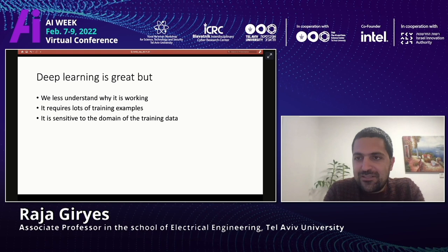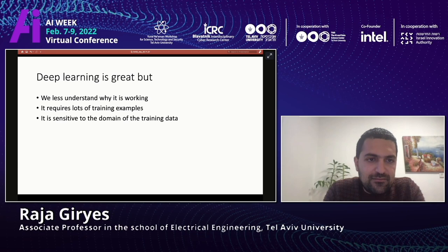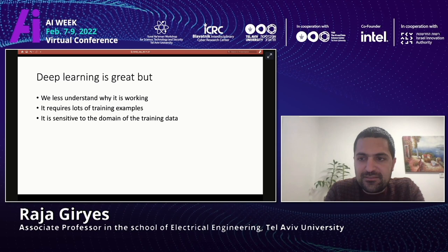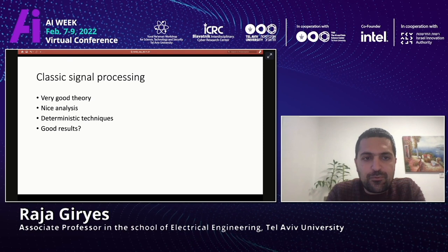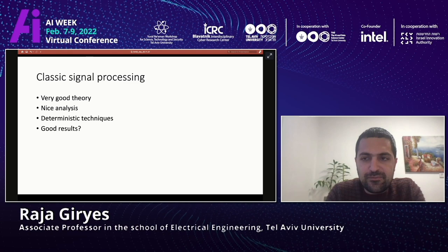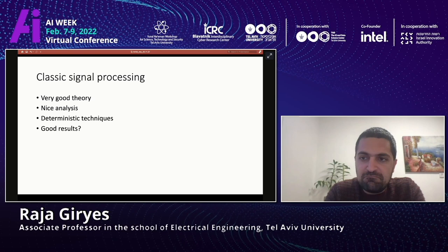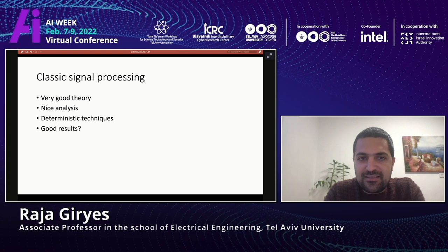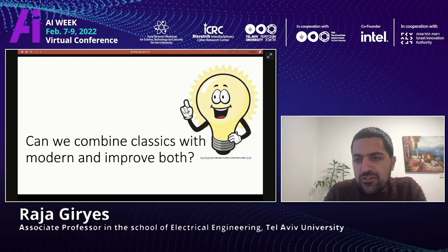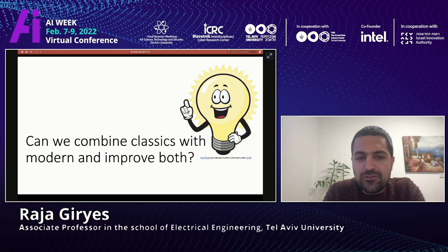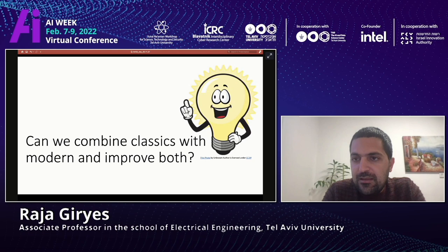We all know that deep learning is great. We have the AI Week where almost everyone uses deep learning and we have seen so many nice applications, but we less understand why it is working, it requires lots of training examples, and it is sensitive to the domain of the training data. On the other hand, classic signal processing has very good theory, nice analysis, and many deterministic techniques, but with respect to quality of results it comes short of deep learning. So the question is whether classic signal processing is dead, or whether we can combine it with modern approaches and improve both.